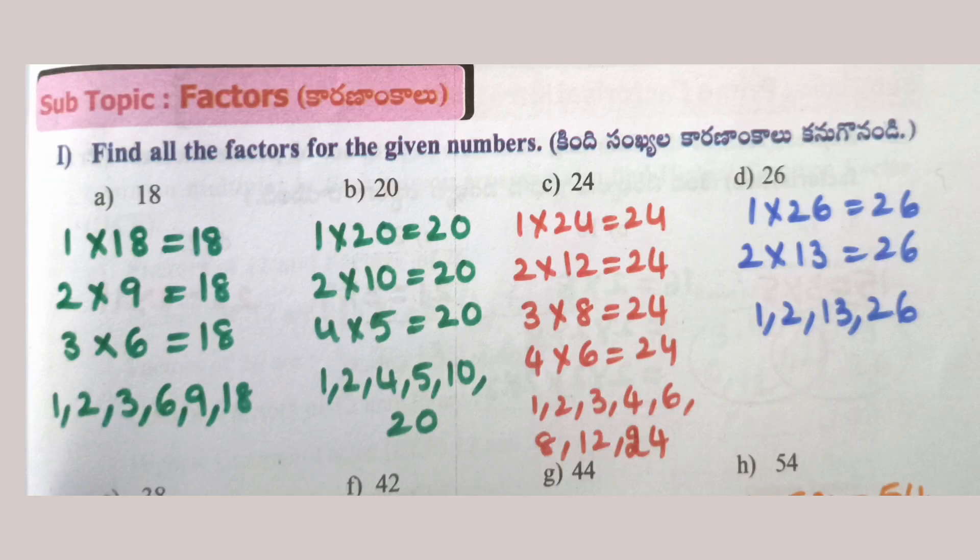Worksheet 12: Find all the factors from the given number. 18: 1×18=18, 2×9=18, 3×6=18. So factors of 18 are 1, 2, 3, 6, 9, 18.